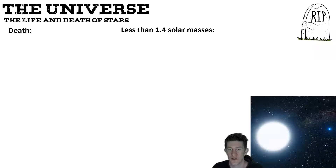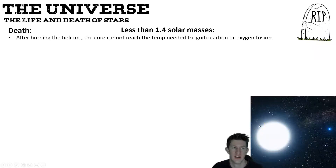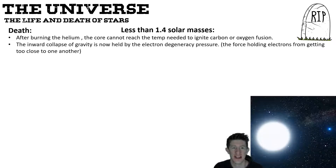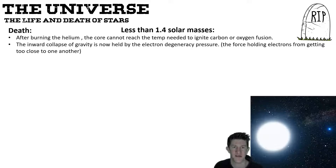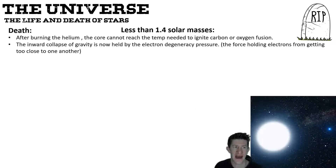For a star less than 1.4 solar masses — including our sun — it burns through the helium process but cannot reach the temperatures required to ignite carbon or oxygen or further elements. The gravity is then held by electron degeneracy pressure: the star has collapsed so much that at the atomic level, the electrons in every atom are almost touching each other. Since electrons are negatively charged, two negative charges repel each other, generating a large force — like pushing two very powerful magnets together. This electron degeneracy pressure stops further collapse.